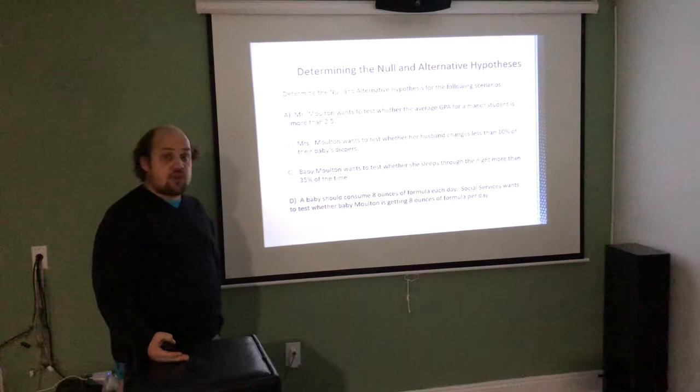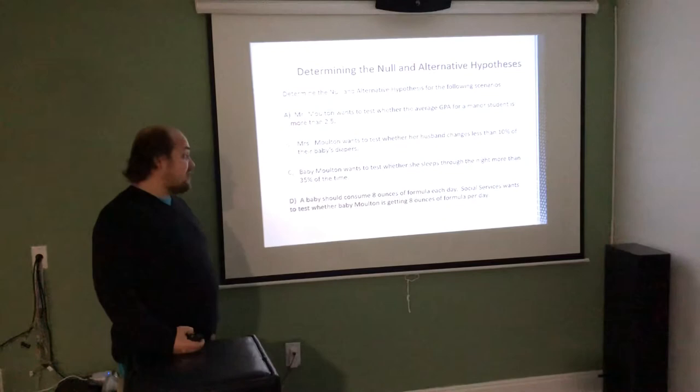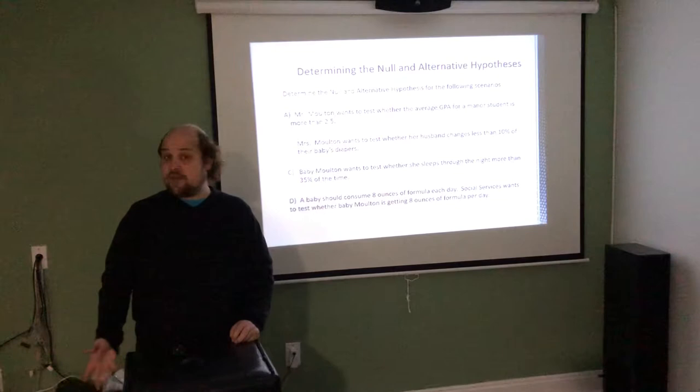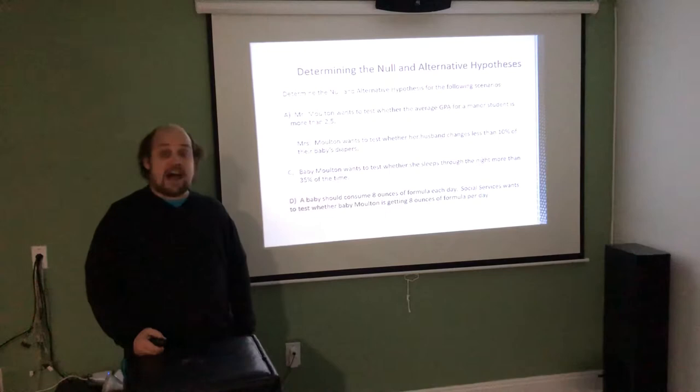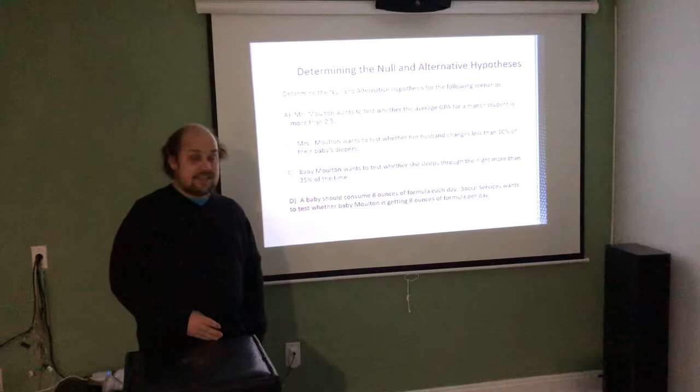We're trying to prove it's larger, so we put that in the alternative. For part D: a baby should consume 8 ounces of formula each day, and social services wants to test whether baby Moulton is getting 8 ounces. Since we don't know if they're concerned about overfeeding or underfeeding, the null is H₀: μ = 8, and the alternative is HA: μ ≠ 8 — a two-tailed test.